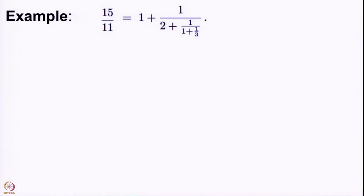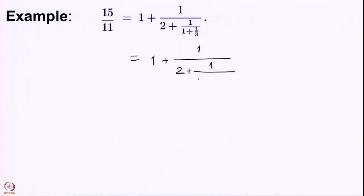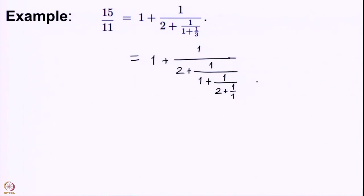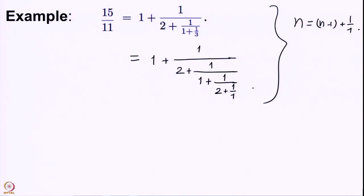We also saw an example in the last lecture: 15 by 11 can be written as a continued fraction. Moreover, this representation is not quite unique because the last integer 3 can also be written as 1 plus 1 by 2 plus 1 by 1. This non-uniqueness only arises at the last term, where n can be written as (n minus 1) plus 1 by 1 — otherwise the representation is essentially unique.